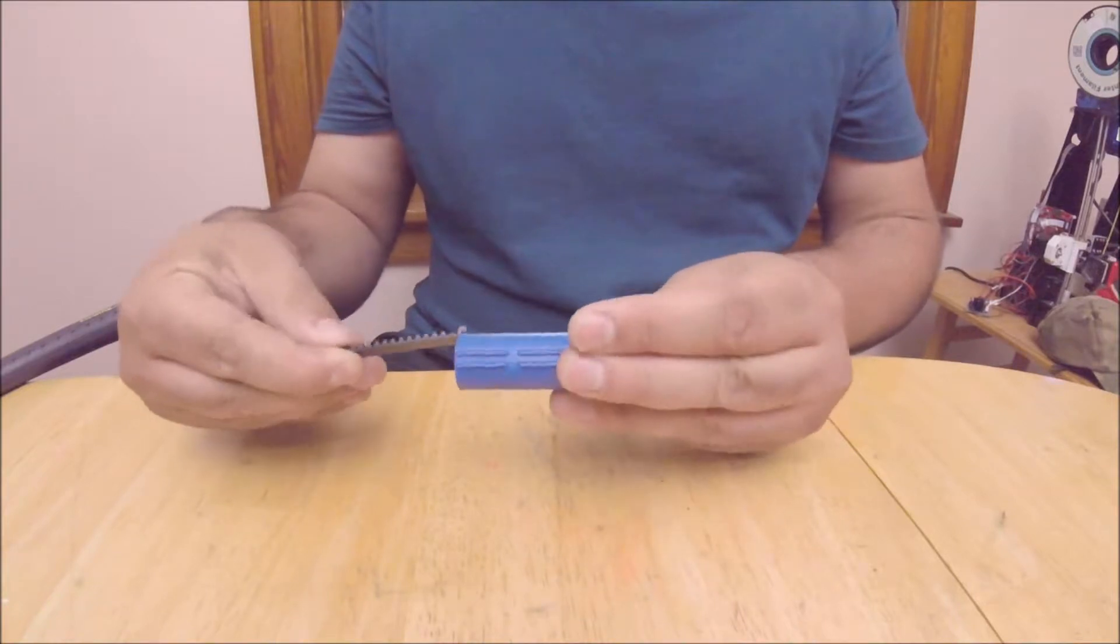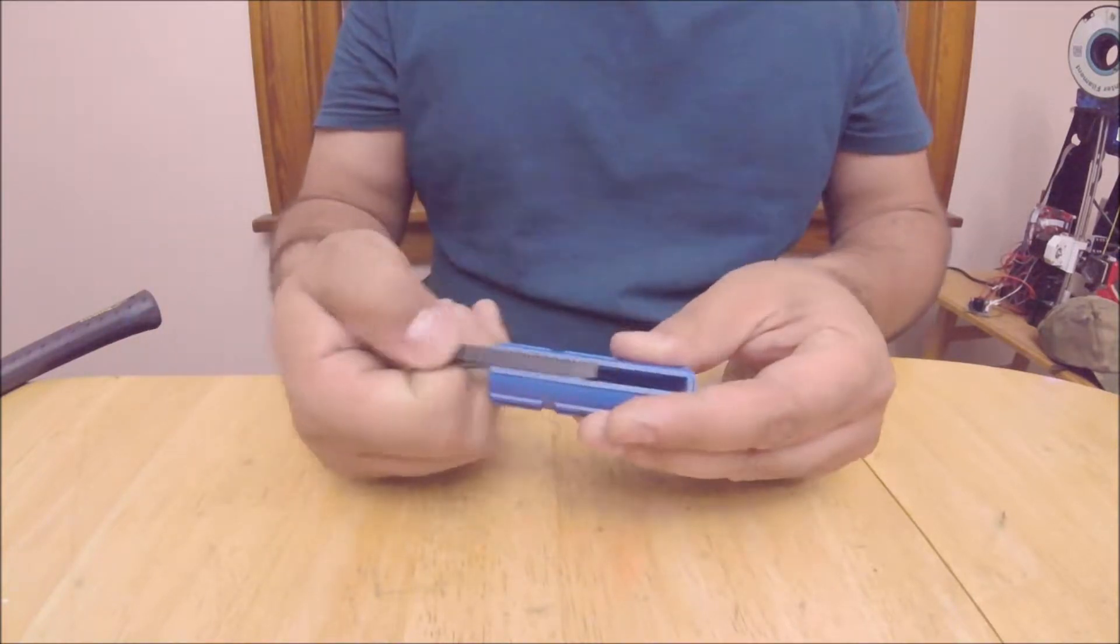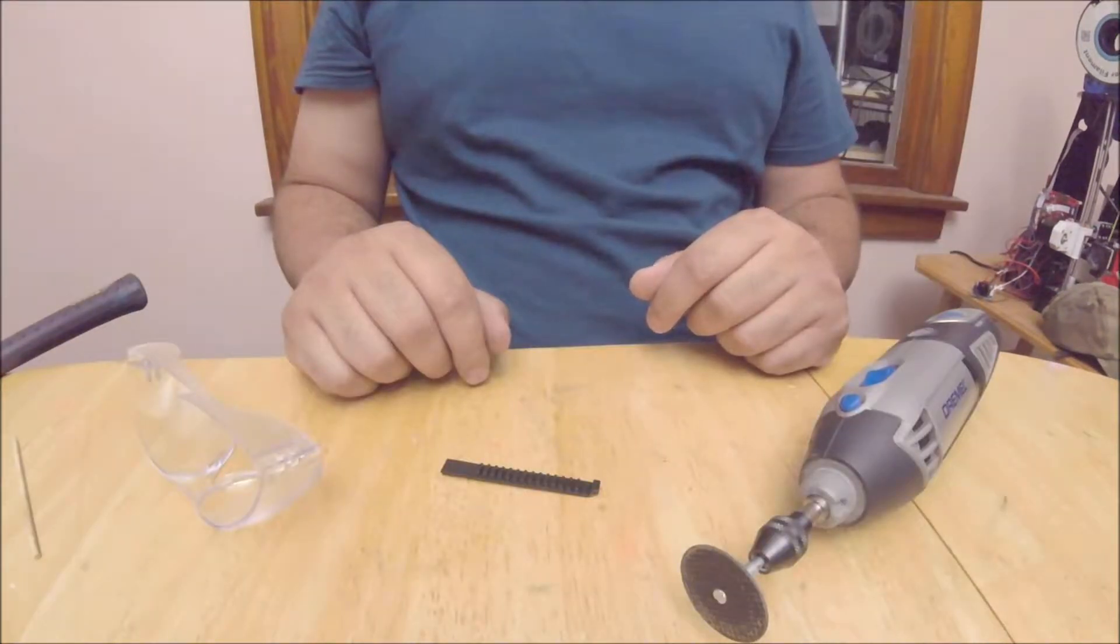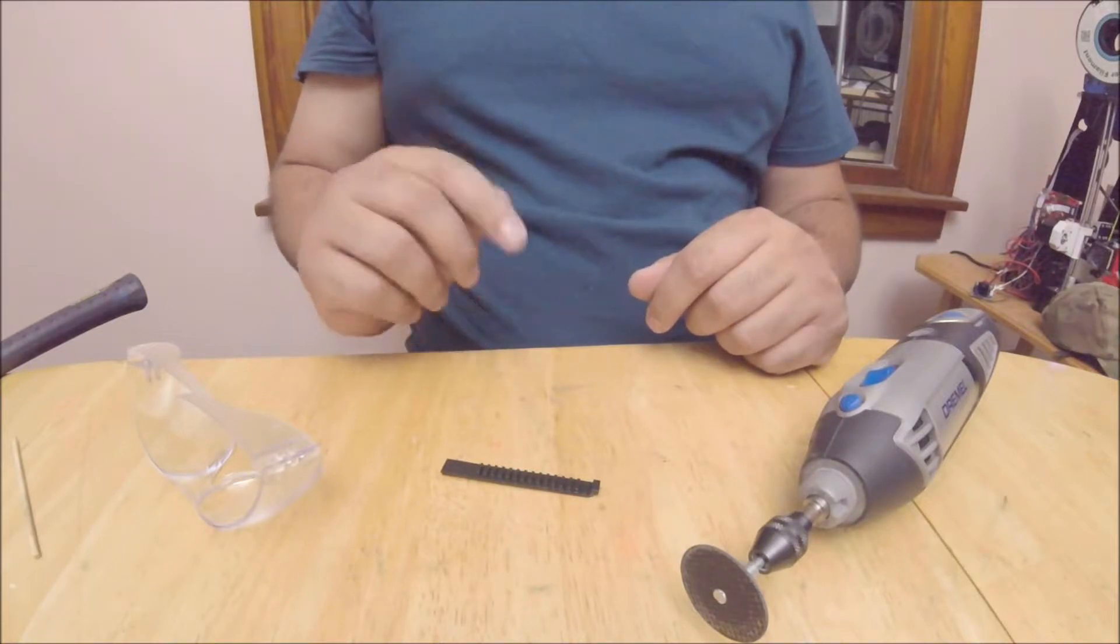So we need to make sure to epoxy the steel tooth rack to the body of the piston. I'm also including a tooth removal tutorial. This is necessary for certain builds, like the one I'm doing for the RPK I'm working on.